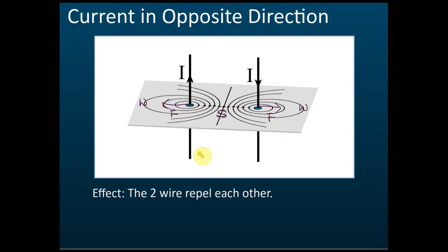For two current-carrying conductors brought close to each other, exam questions usually ask whether the wires attract or repel. Remember: same direction currents attract, opposite direction currents repel. They may also ask you to identify the correct field line pattern in objective questions, giving you several options. You need to know the magnetic field patterns — same direction gives a weaker field in the middle and stronger at the sides, while opposite directions give the reverse. At minimum, know these field line patterns for objective exam questions.